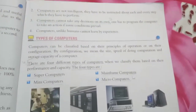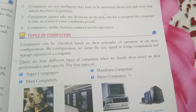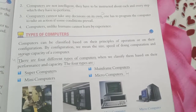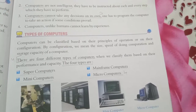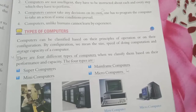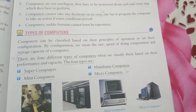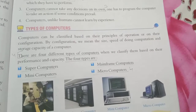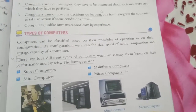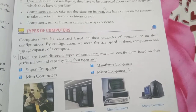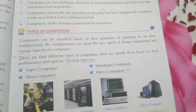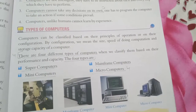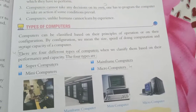Next are the types of computers. Computers can be classified based on their principles of operation or on their configuration. By configuration, we mean the size, speed of doing computation, and storage capacity of a computer. There are four different types of computers when we classify them based on their performance and capacity.